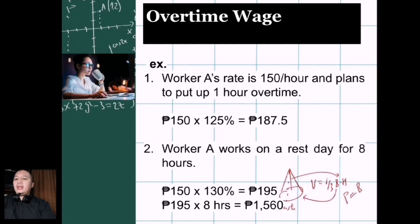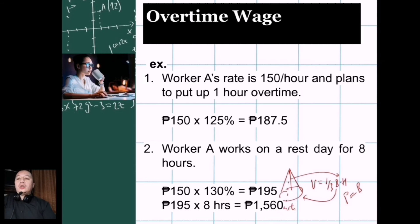For example, Worker A's rate is 150 per hour and renders one hour overtime: 150 × 1.25 = 187.50 pesos for that overtime hour. If Worker A works on a rest day — his 6th day — for 8 hours: 150 × 1.30 = 195 pesos per hour. Multiply 195 by 8 hours and the total earnings for that day are 1,560 pesos.